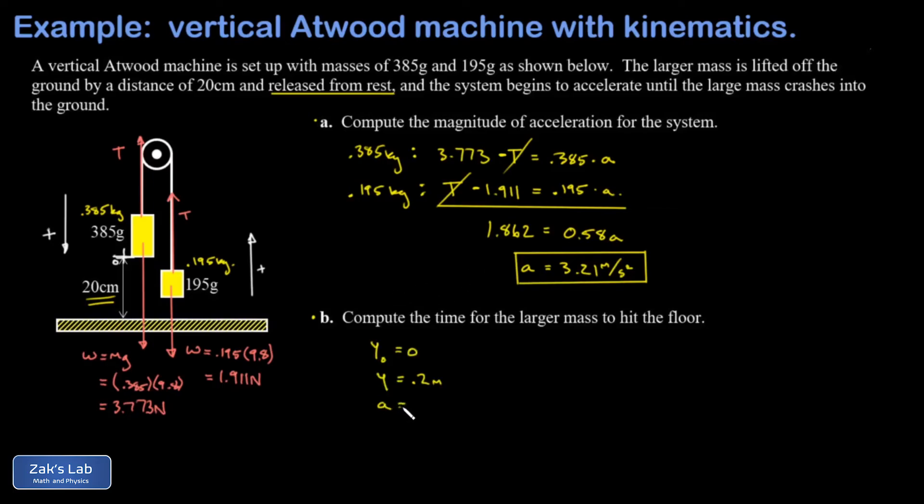My acceleration is in that downward direction so that's a positive 3.21 meters per second squared. My initial velocity, it started from rest, so that's zero. We write down the kinematics equation describing position as a function of time for this object: our final position is 0.2 meters, our initial position was taken to be zero, our initial velocity was zero, our acceleration is 3.21 meters per second squared, and then I have a t squared term.